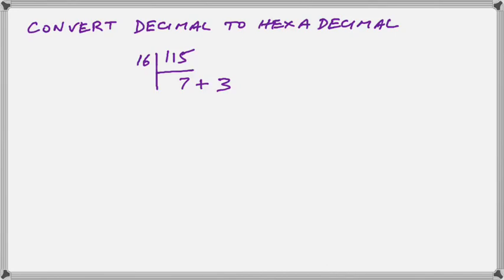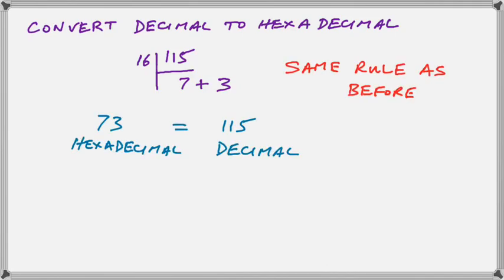The procedure for converting decimal to hexadecimal is absolutely identical. What we do is we write down our decimal number, and now we divide by 16, which is our base. After the very first division, we have a result that's less than 16. So we just take that result and the remainder, and that is our hexadecimal equivalent of 115.